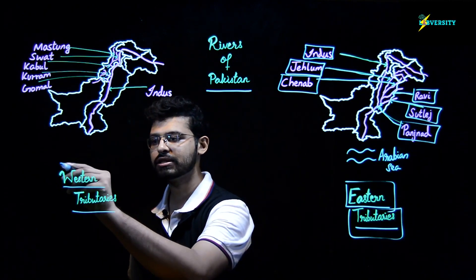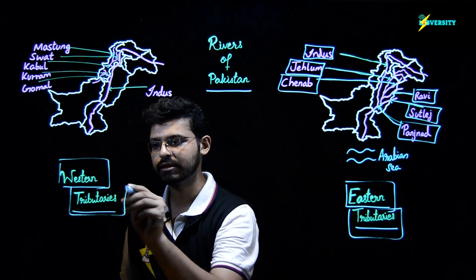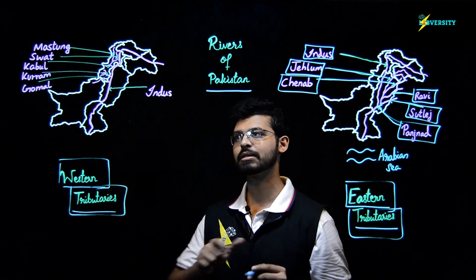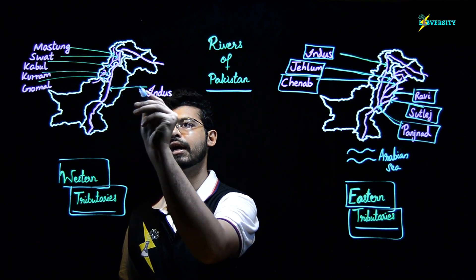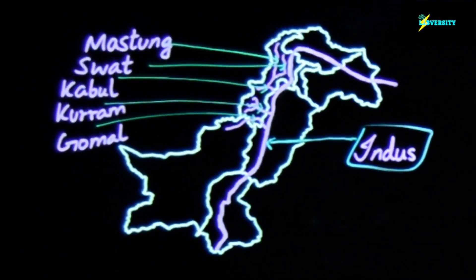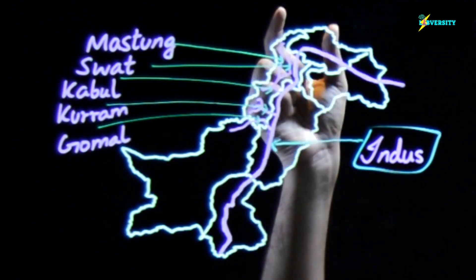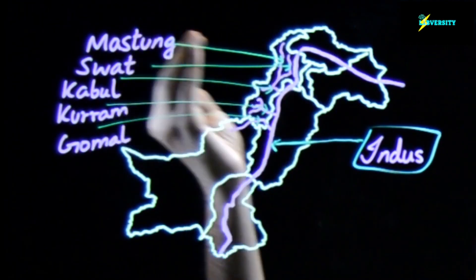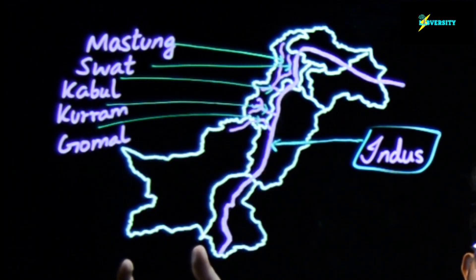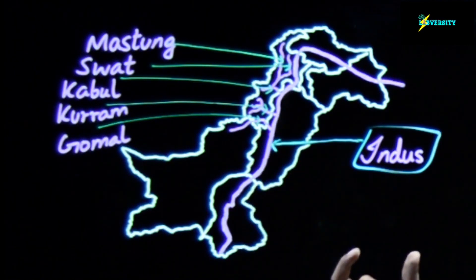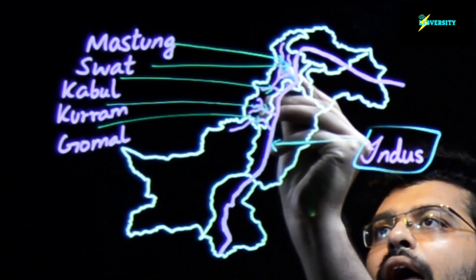Now let us see the western tributaries of River Indus. We have a map over here and we have labeled the rivers as well. This one is the Indus river. On the western side we can see that some rivers are joining River Indus from the west. These rivers are present in the Khyber Pakhtunkhwa province of Pakistan.